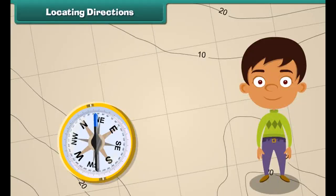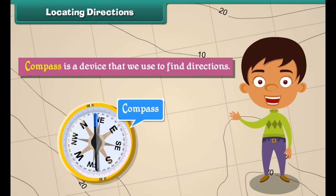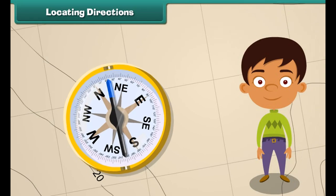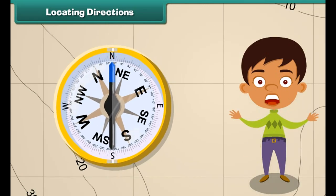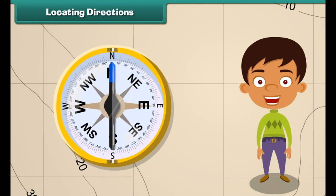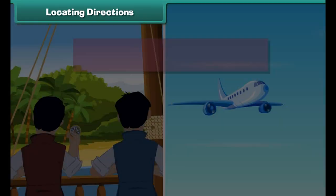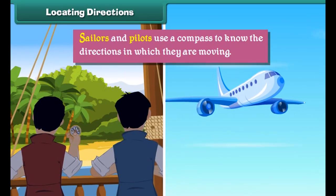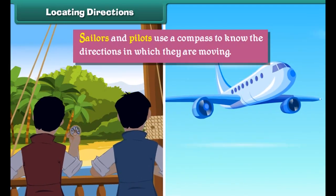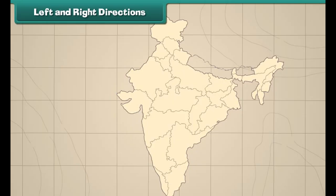The sun always rises in the east and sets in the west. A compass is a device that we use to find directions. It has a needle that rotates to indicate direction. The head of the needle always points towards north and the tail towards south. Sailors and pilots use a compass to know the directions in which they are moving.